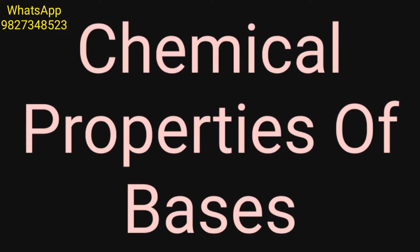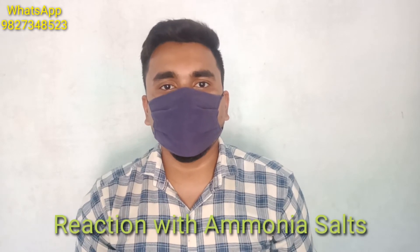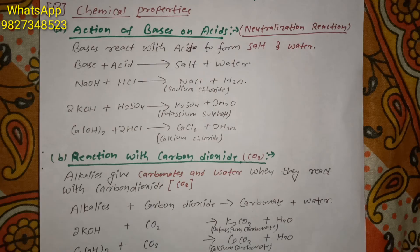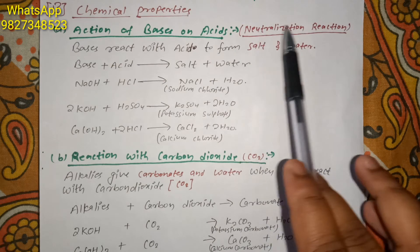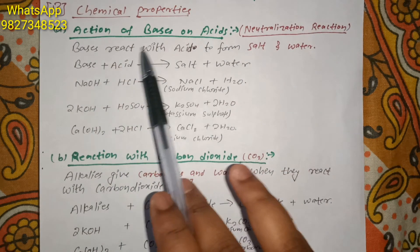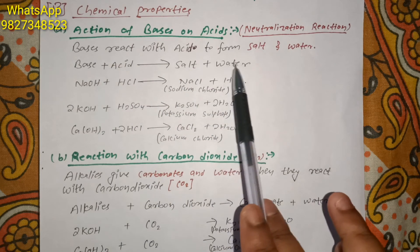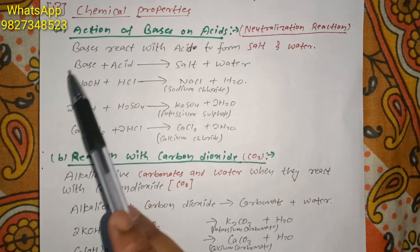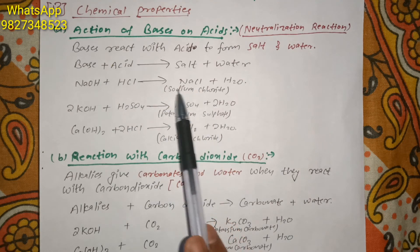After physical properties, let's see some chemical properties. The first is the action of bases on acids, also called neutralization reaction. In a neutralization reaction, bases react with acids to form salt and water: base + acid → salt + water. For example, sodium hydroxide plus hydrochloric acid gives sodium chloride and water. Potassium hydroxide reacting with sulfuric acid gives potassium sulfate (K2SO4) and water. Calcium hydroxide reacting with hydrochloric acid gives calcium chloride and water.